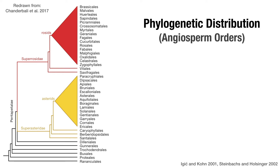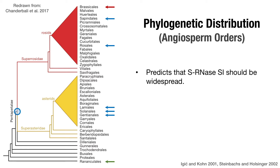This phylogeny of plant orders within eudicots illustrates the distribution of self-incompatibility. The red arrow indicates the Brassicaceae-type mechanism, and the green arrow indicates the poppy-type mechanism. The blue arrows point to orders which contain species that are known to express RNase-based self-incompatibility. Independent lines of evidence indicate that RNase-based SI is homologous, and was present in the common ancestor of pentapetaly. Its distribution predicts that RNase-based SI should be widespread within the core eudicots.